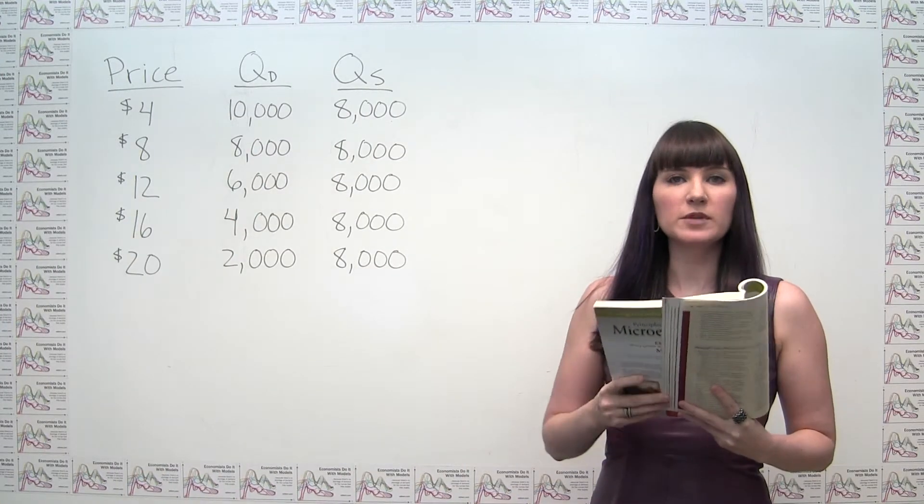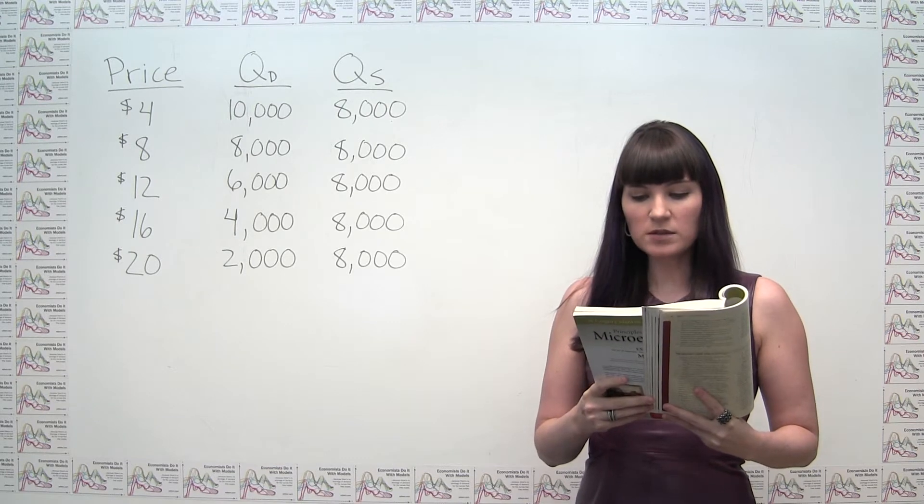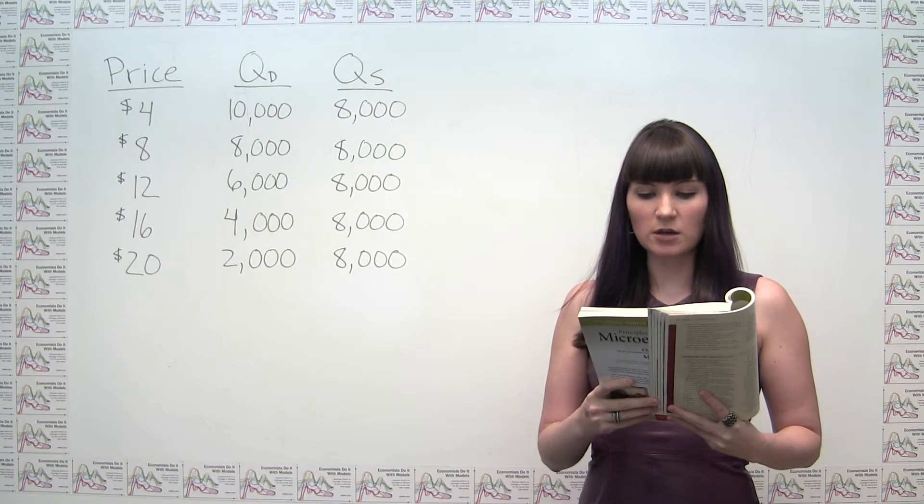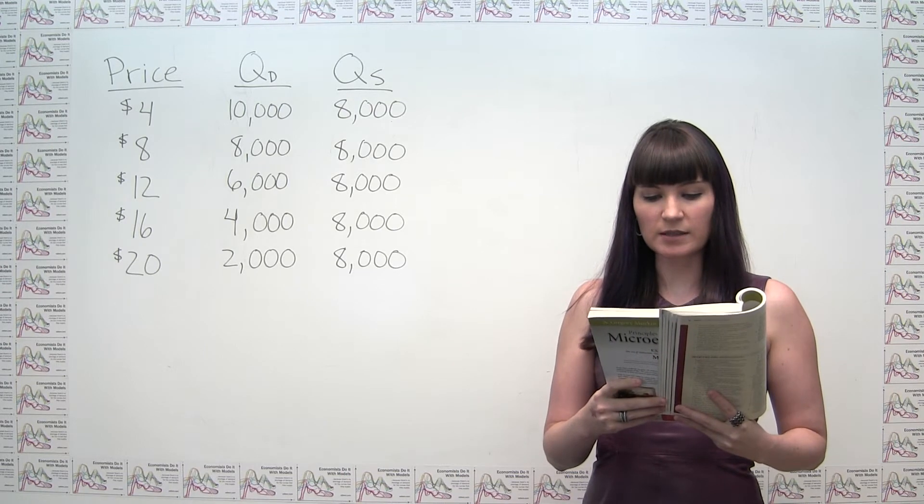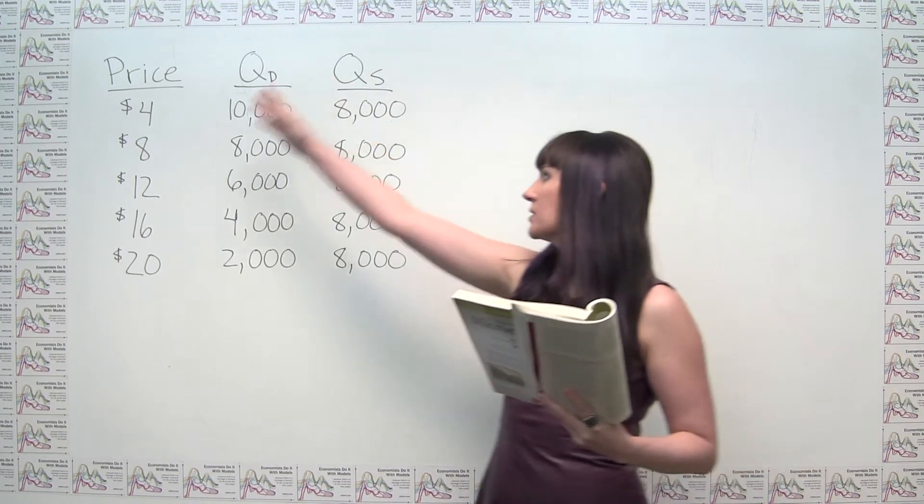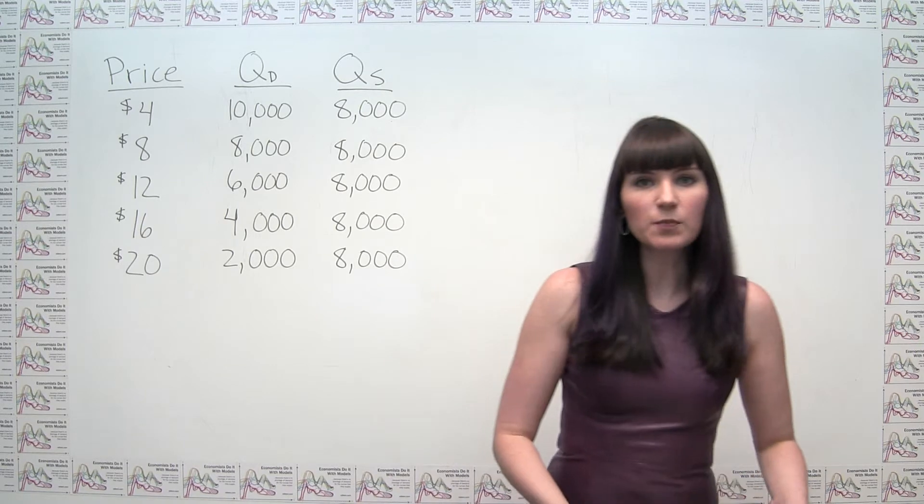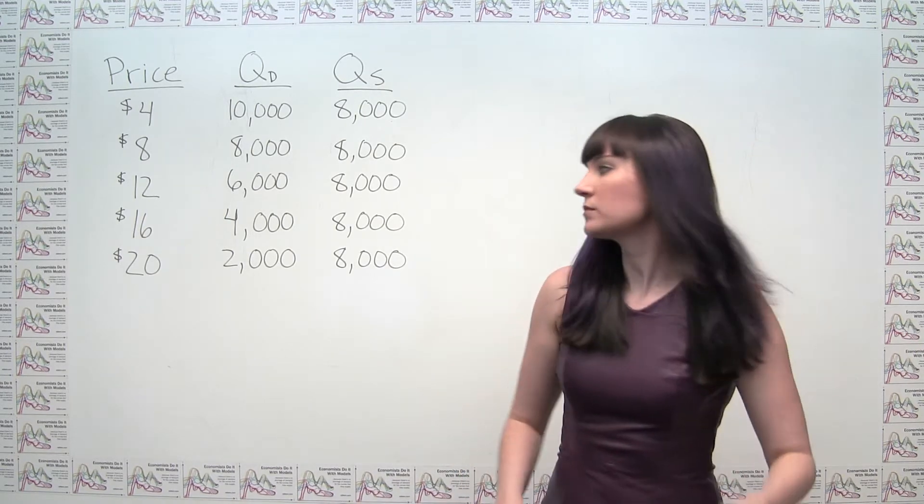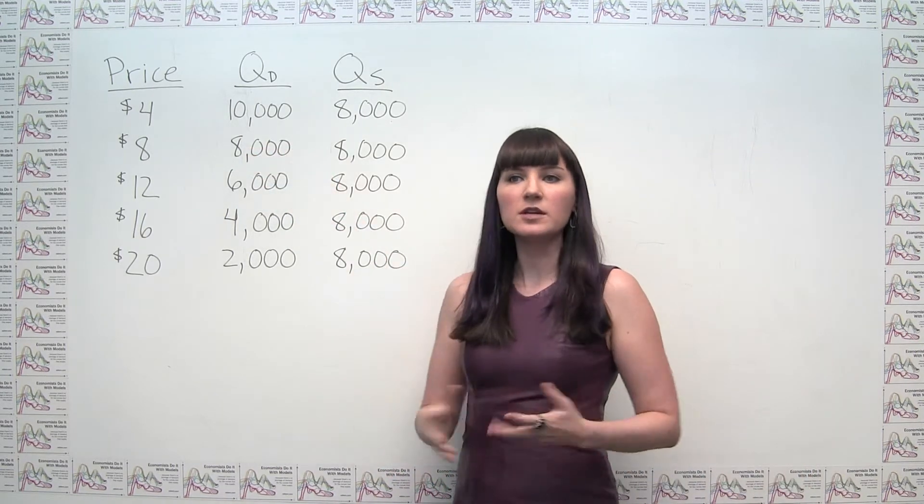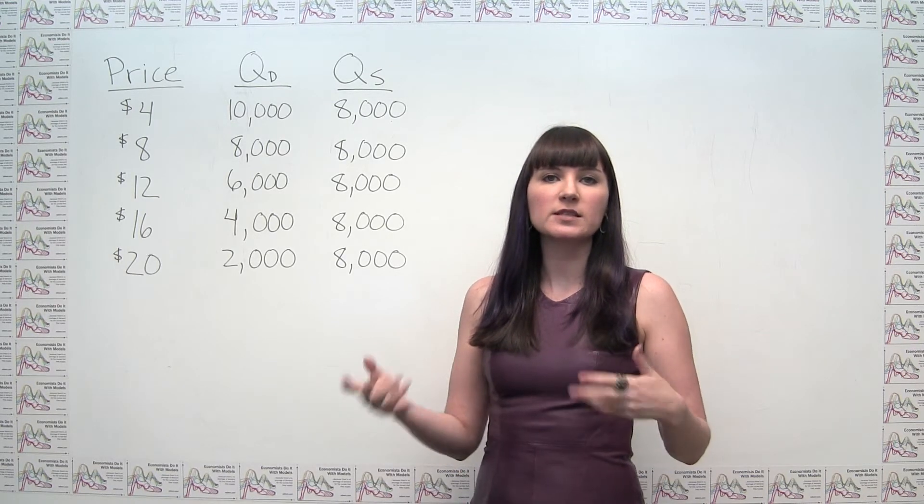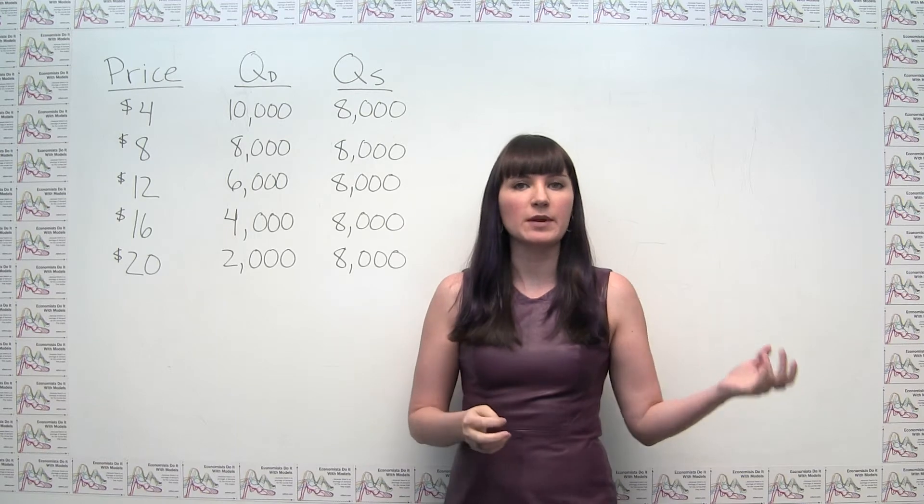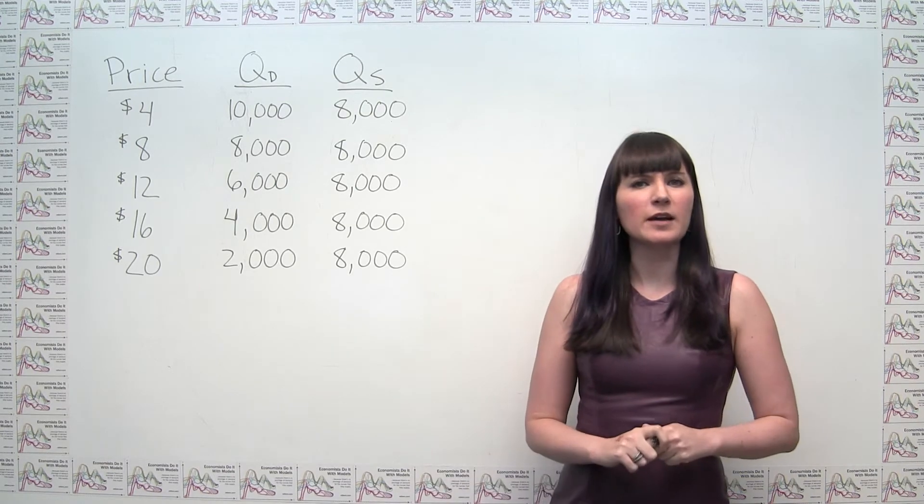The beginning of the problem reads as follows. Suppose that the price of basketball tickets at your college is determined by market forces. Currently, the demand and supply schedules are as follows, and then they give you these numbers here. And this is a pretty interesting problem, not only because of what's shown here, but actually in reality, a number of schools are trying some interesting things with ticket auctions or dynamic pricing for tickets.